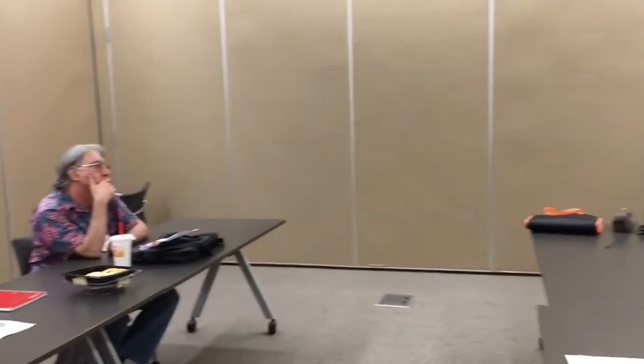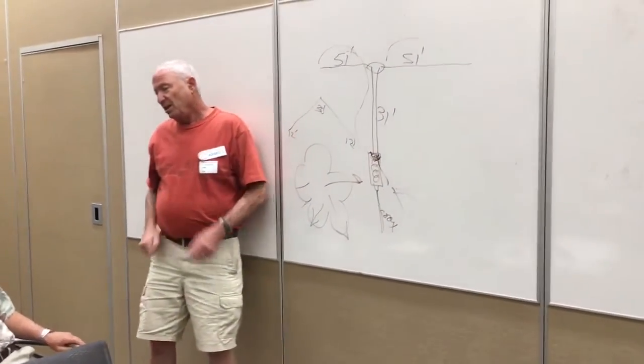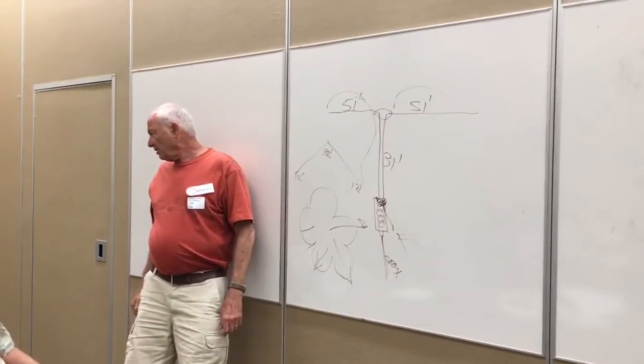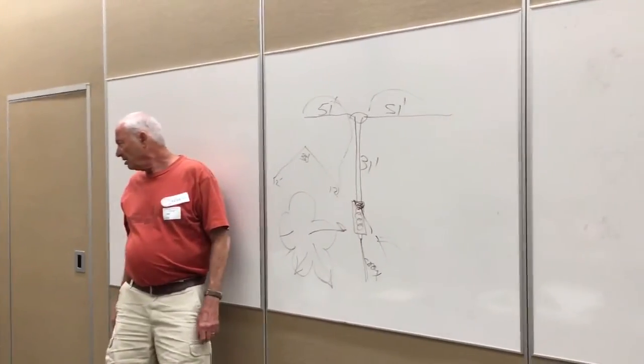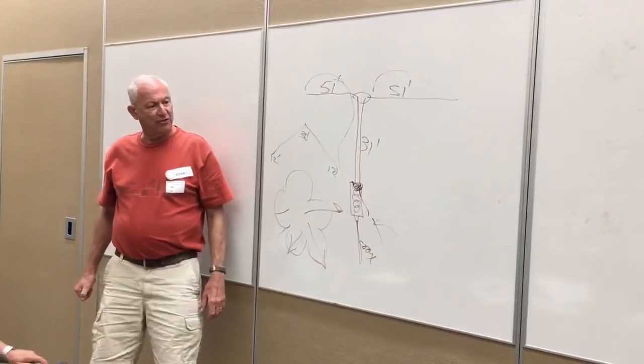Yeah, supposedly, if you tie both of these leads together to make one long one and then run it against a counterpoise, you can get 160. You make a loop out of it. Yeah, you make a loop out of the antenna. Yeah, the whole thing is a loop.